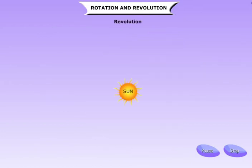The Earth while rotating on its axis is also going around the Sun. This movement of the Earth around the Sun is called revolution. The Earth revolves around the Sun once per year.